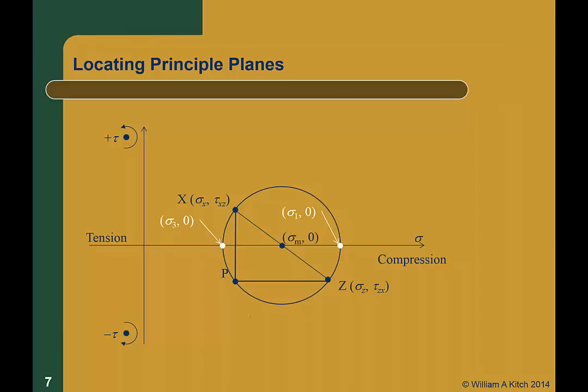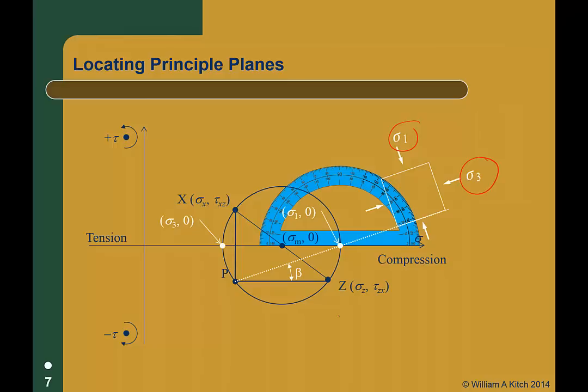To determine the orientation of the principal planes, we start at the pole point P and draw a line through the point of maximum principal stress. The line is parallel to the plane of maximum principal stress and forms an angle beta with respect to the horizontal. If we draw a soil element along this line, it will be oriented with the principal planes, and the major and minor principal stresses will act in the direction shown. To measure the direction, we simply place a protractor on the Mohr's circle plot and read off the angle, which in this case is 18 degrees. Since the Mohr's circle is a graphical method, it must be drawn to scale. Today it is easy to draw Mohr's circle using CAD software to ensure it is properly drawn to scale.